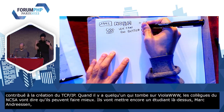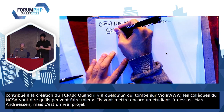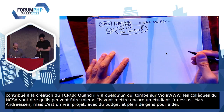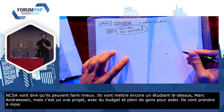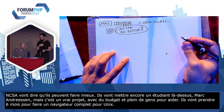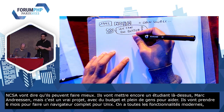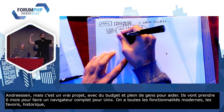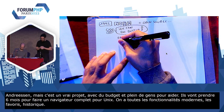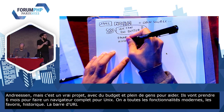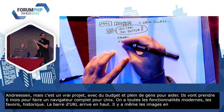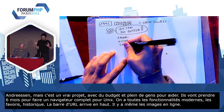Donc, ils vont prendre six mois pour faire un navigateur complet pour X. Là, on a tout : on a toutes les fonctionnalités modernes, les favoris, l'historique, les liens qui se cliquent en un simple clic. Et la barre d'URL arrive en haut — tous les autres navigateurs avant mettaient la barre d'URL en bas. Et il y a même les images en ligne : avant, si on voulait afficher des images en HTML, c'était forcément une pop-up. Là, on a la balise IMG qui commence à arriver.